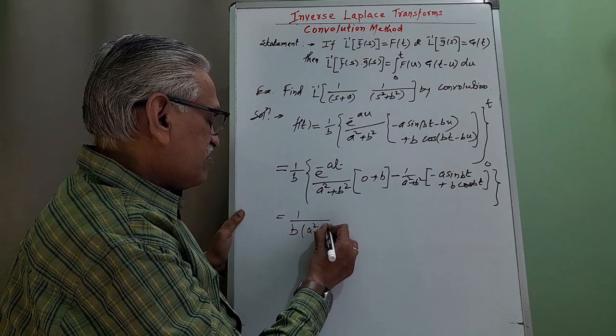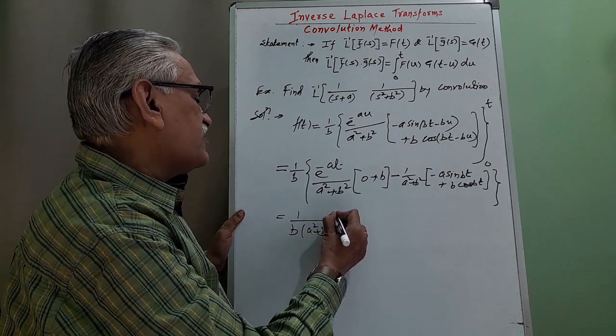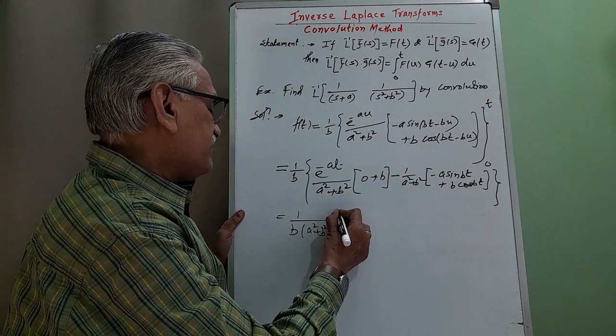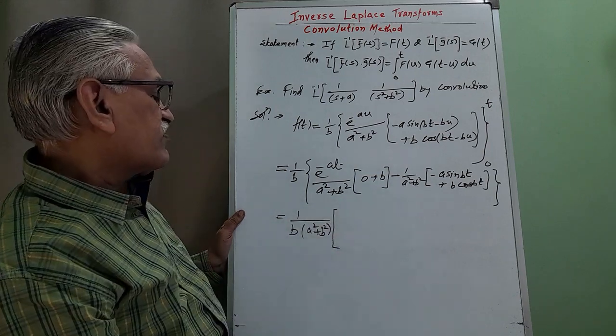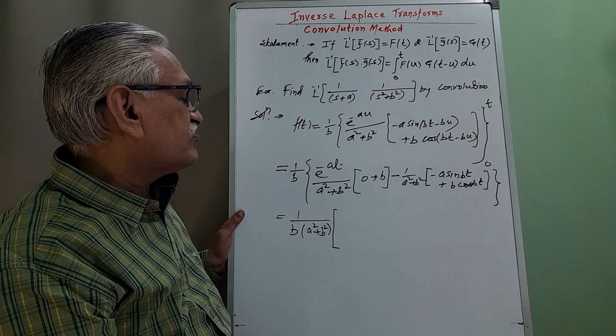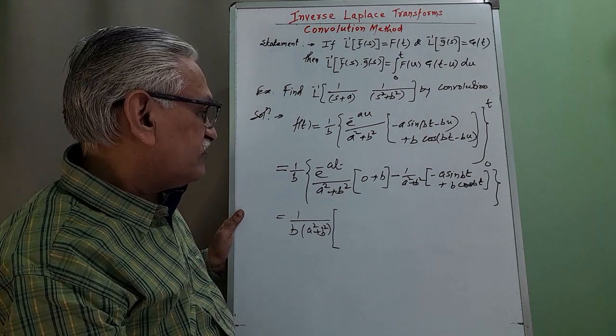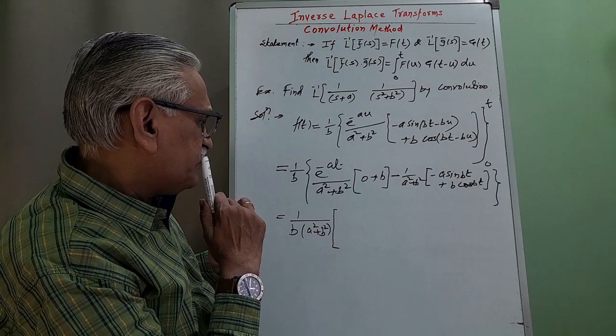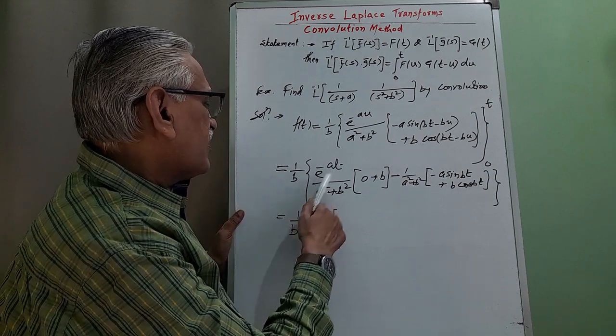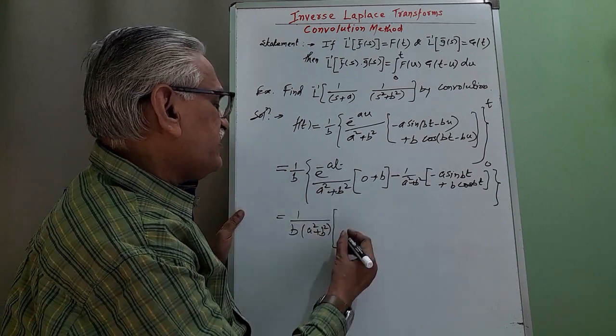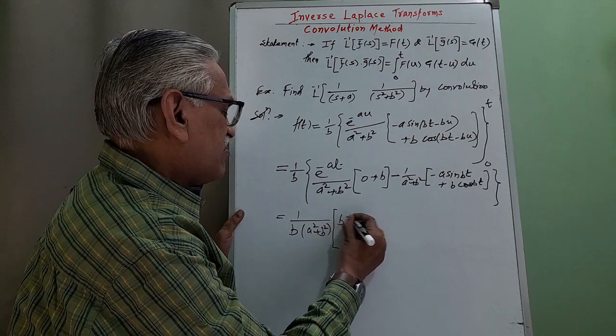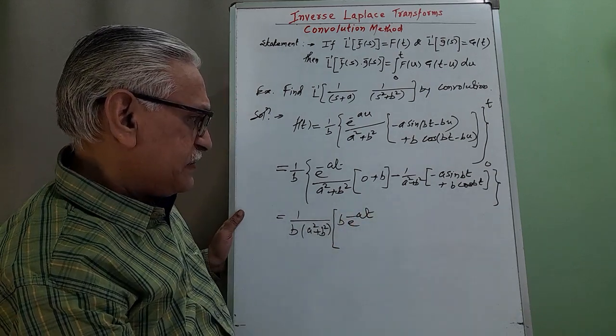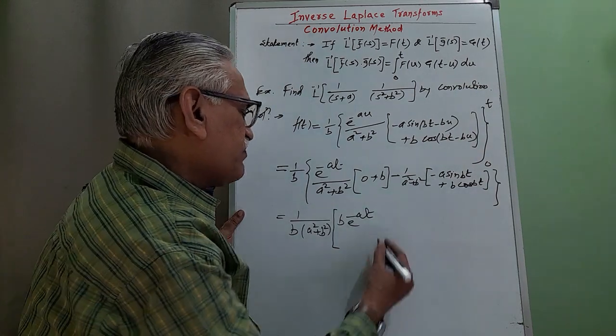And therefore, the remaining term is as b into e raised to minus at, minus minus it becomes plus.